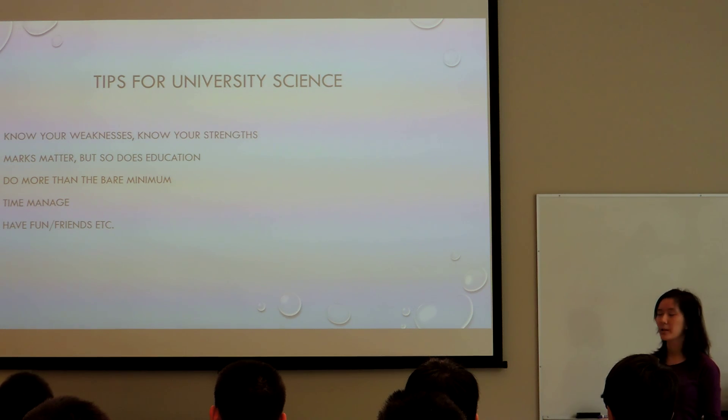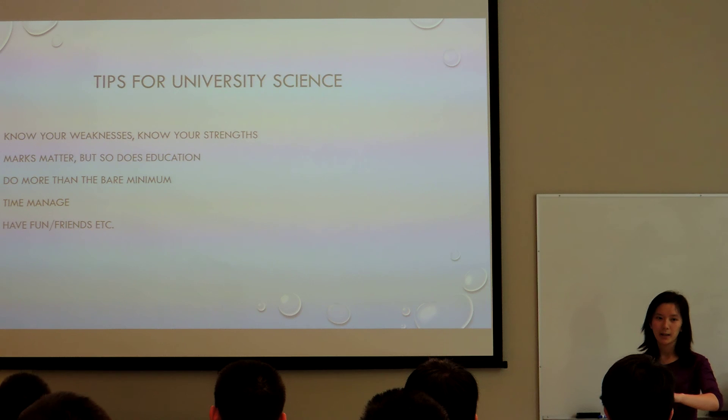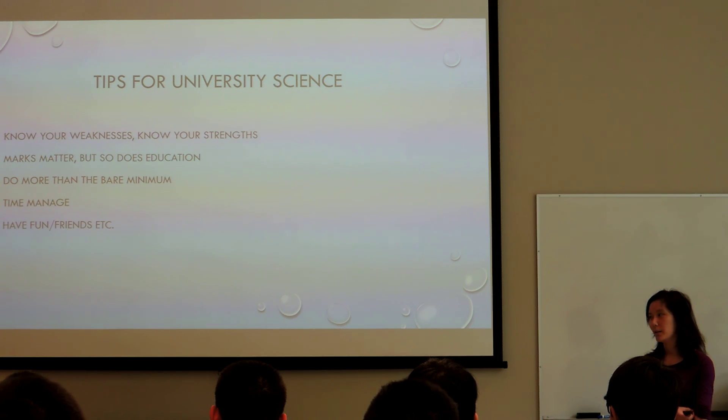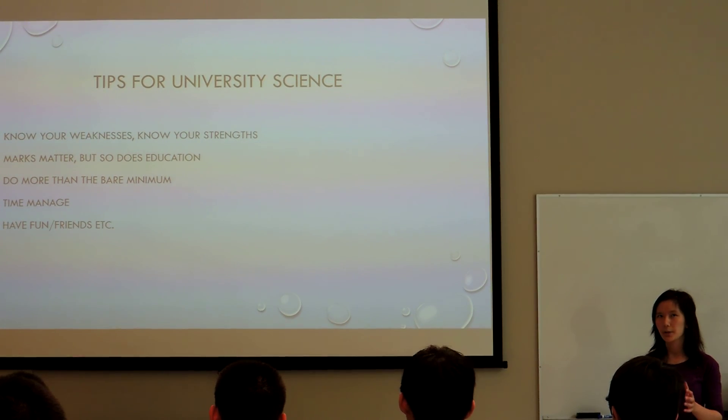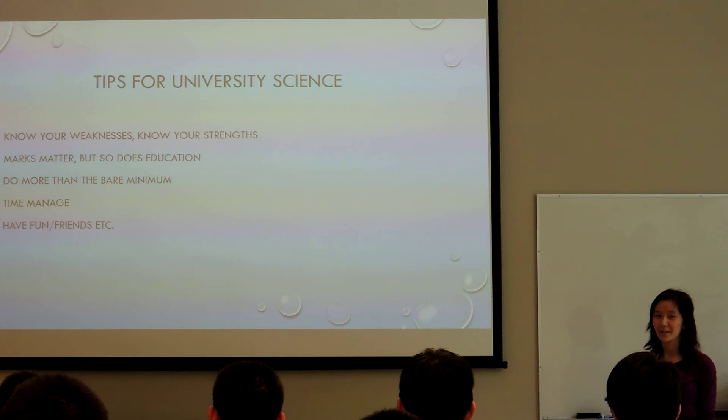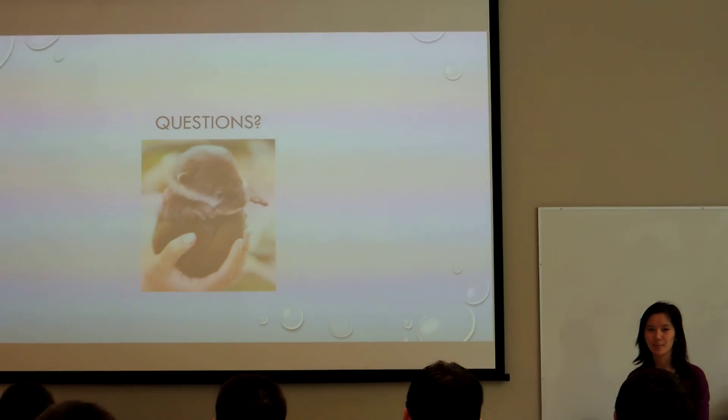Do more than the bare minimum. Don't just try to fit the criteria of the teacher or the professor, try to do more. You are paying a lot for this education, might as well take as much as you can from it. Time management is really important. If you do a regular science degree, you're probably taking like 20 credits a semester, which is like 5 courses a semester, and it's pretty packed. Finally, have fun and make friends. Why go through university if you're not going to have fun, right? With that, I'd like to thank you all for listening. Thank you all.